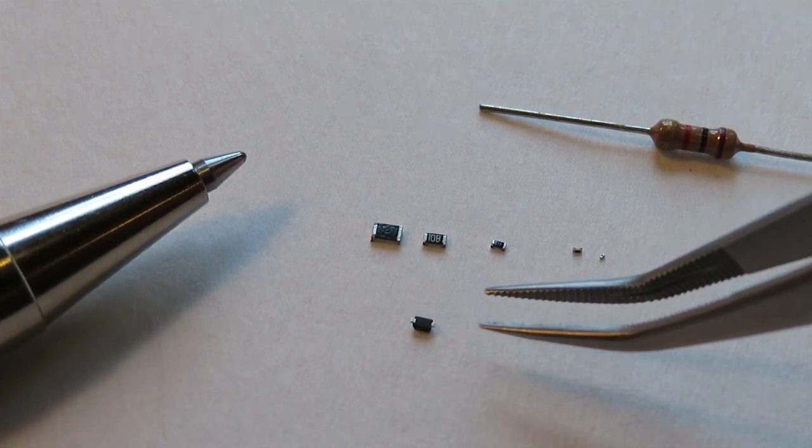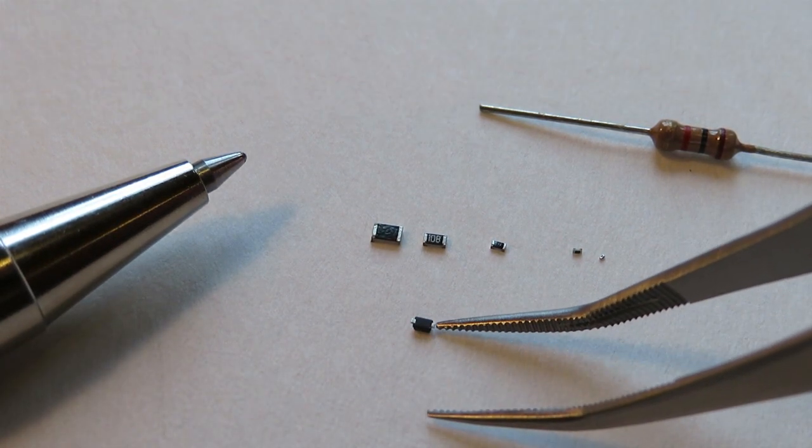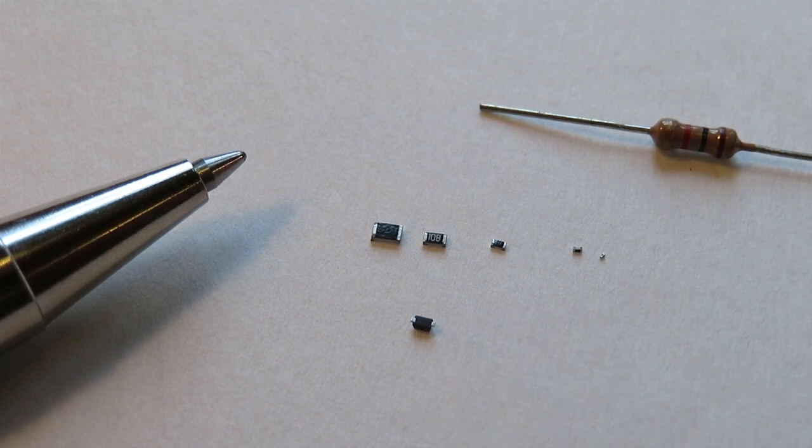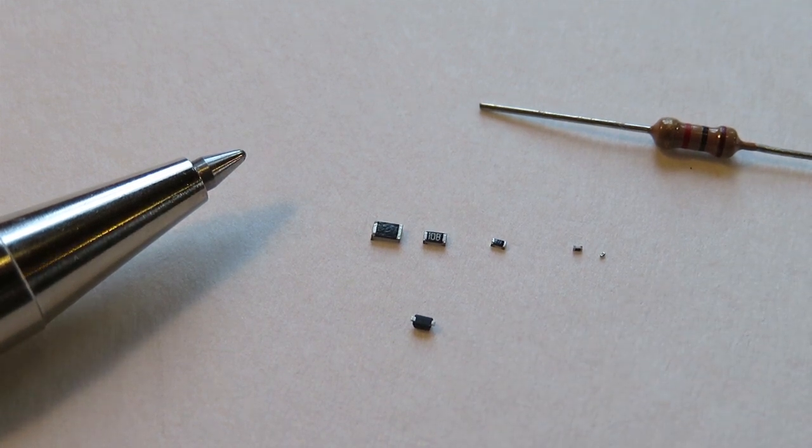This is a small outline diode package, or SOD 523. It has leads that extend out from the end of the 1.25 by 0.85 millimeter package.